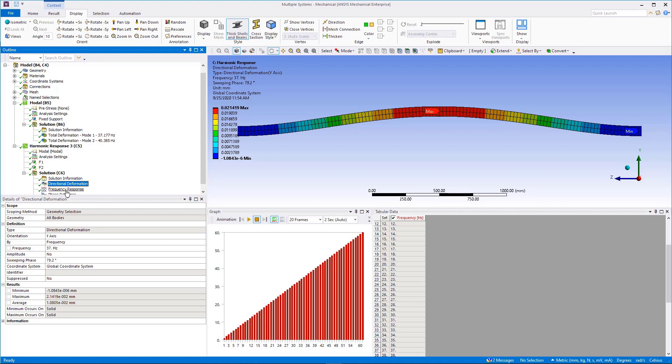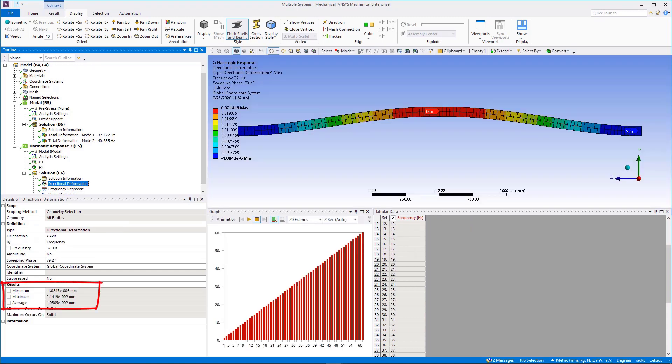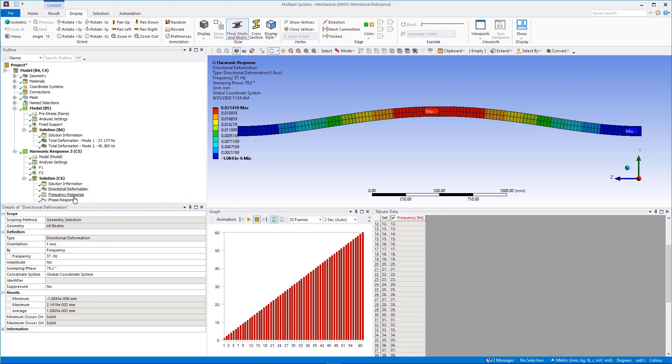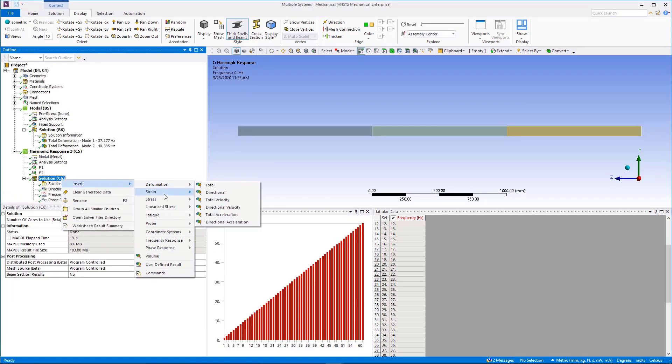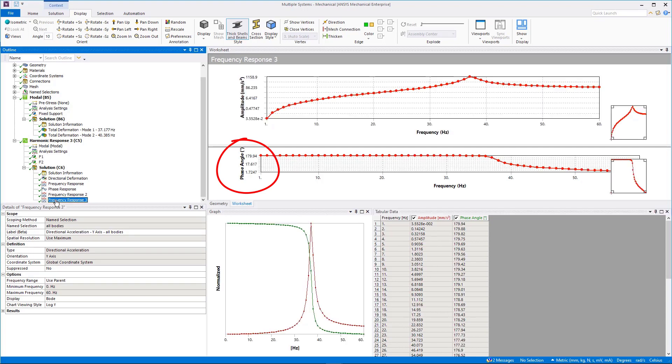Notice how this corresponds closely with the first mode shape and corresponding first natural frequency from the modal analysis. Also, the maximum value reported in this plot corresponds to the peak value on the amplitude versus frequency plot. We can obtain similar results for velocity and acceleration peak results. Note that these results are 90 degrees out of phase with each other. This makes sense given that these results are derived from first and second derivatives of the displacement result which is a sinusoidal expression of phase angle.